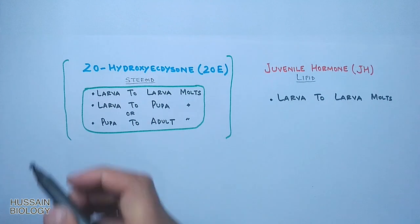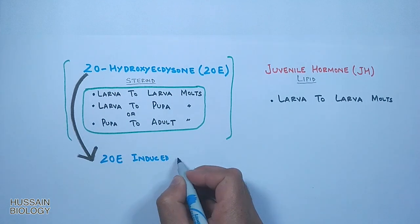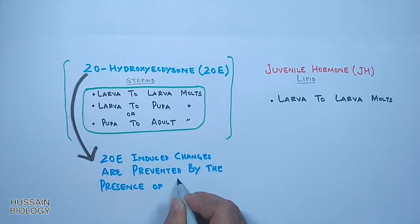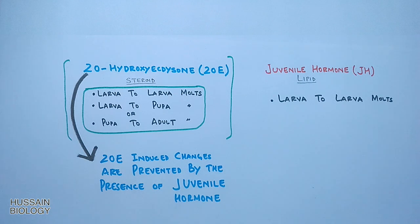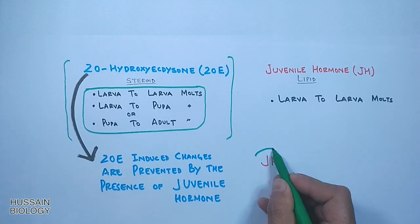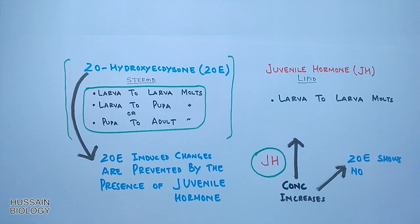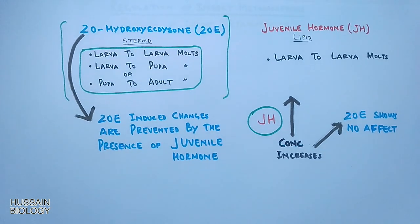It must be noted that 20-hydroxyecdysone-induced changes are prevented by the presence of juvenile hormone. When juvenile hormone concentration is high, 20-hydroxyecdysone shows no effect on molts and only larvae to larvae molts are driven. Once juvenile hormone concentration decreases, 20-hydroxyecdysone drives larvae to pupae and larvae to adult molts.